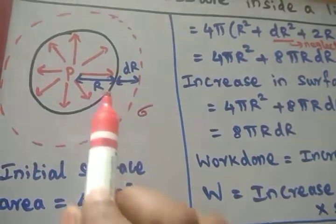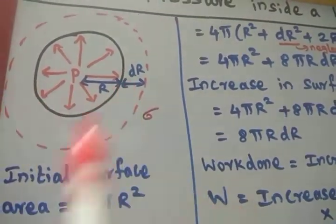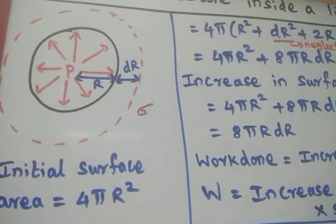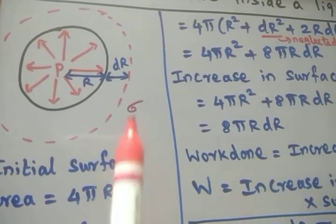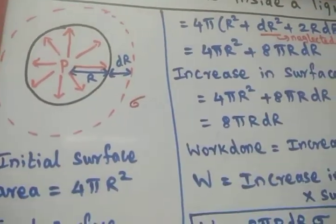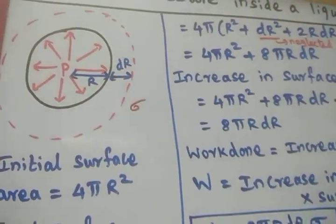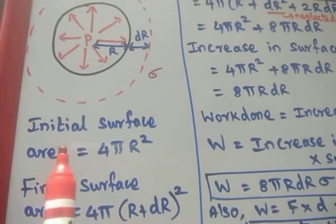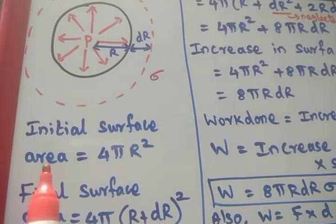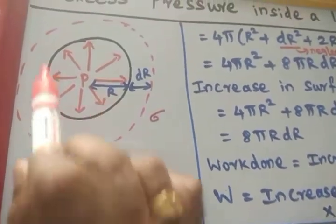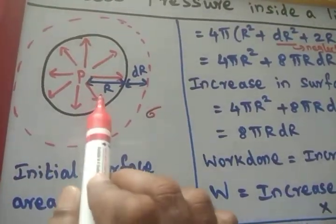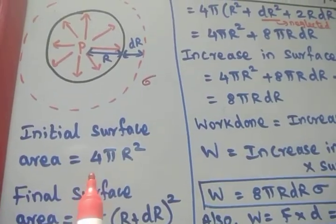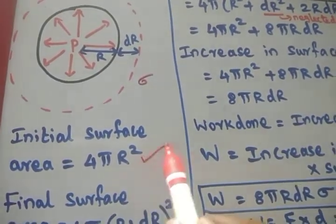Then due to this normal force — that is the excess pressure — the radius of the spherical liquid drop will be increased by the distance dr. Now we are going to see what the initial surface area is. Initially the spherical surface has radius R, so the initial surface area is 4 pi R squared.